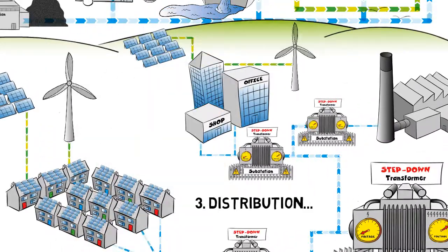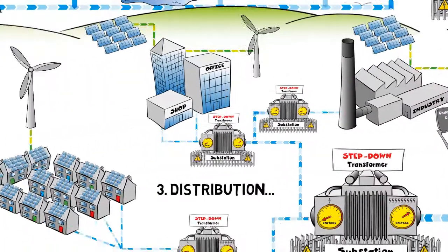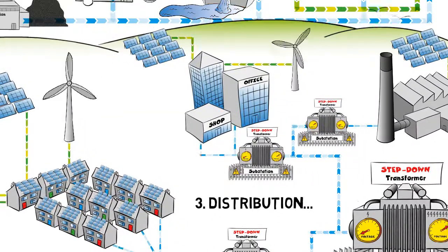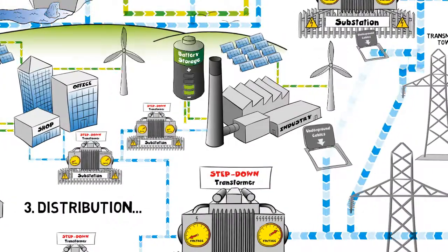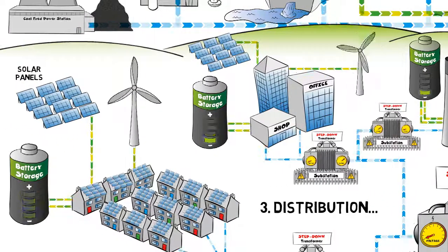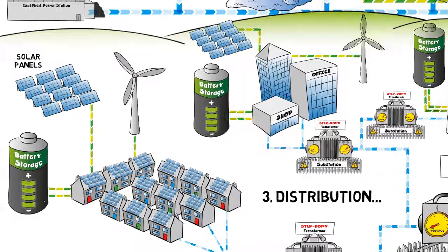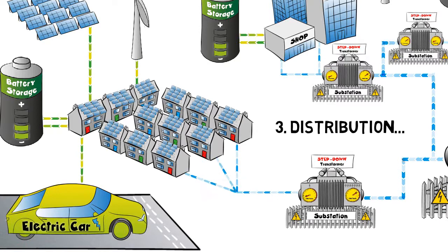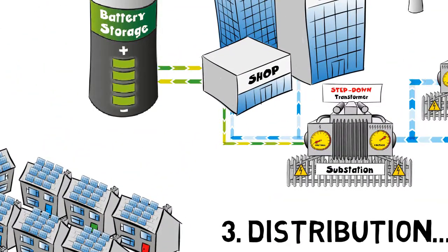We are now beginning to generate a lot of power on the distribution side of the network. This energy can be supplied back into the main network and also stored in batteries for use when there is need for more power. There is a large need for generating more power locally as households will need more electricity in the future — for example, we might all be driving electric cars, which will need to be charged at different times during the day. Battery storage and other local generation allows us to feed back excess electricity into the system when there is a large demand on the network.